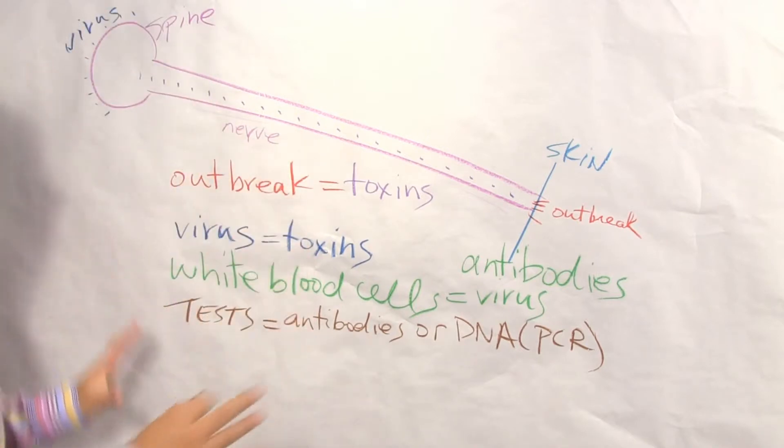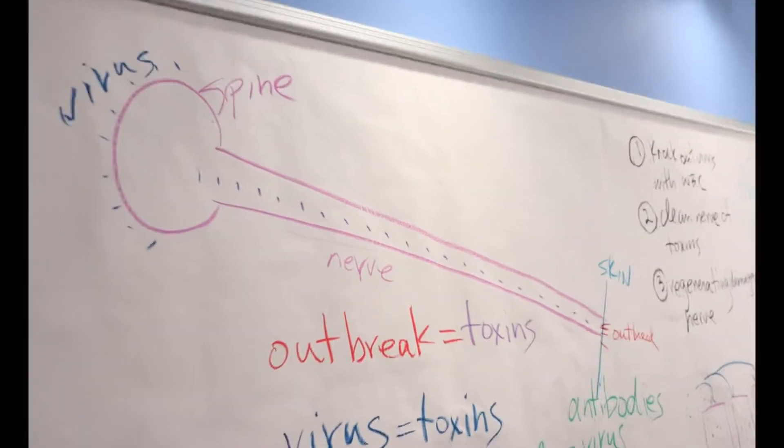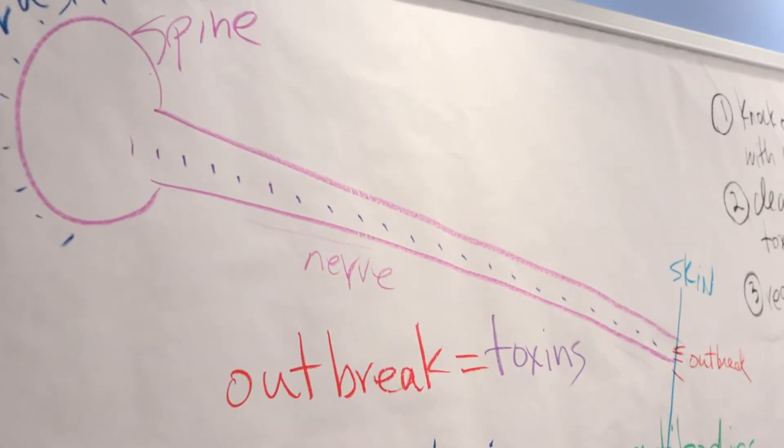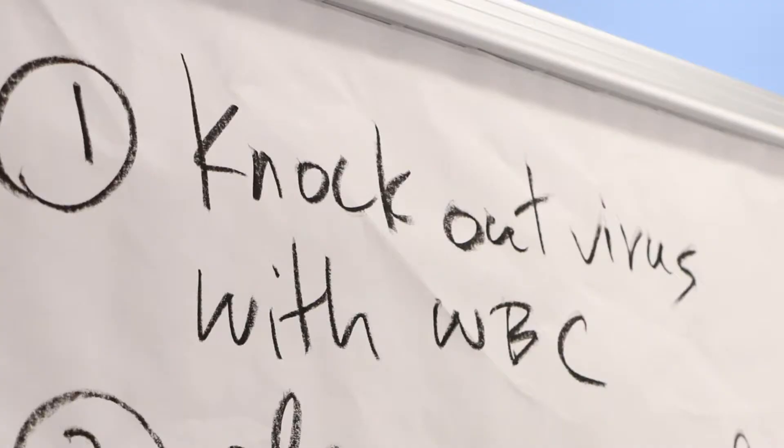With all this data, we're going to go over something very simple. The first thing, regardless of whatever you heard, is to knock out the virus. That's step one. If you can't knock out the virus, the virus will continue to make toxins and you're going to continue to get skin outbreaks.